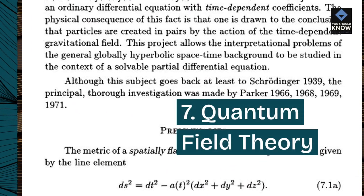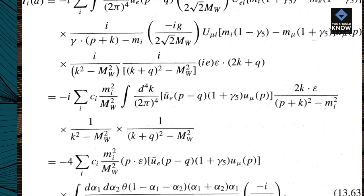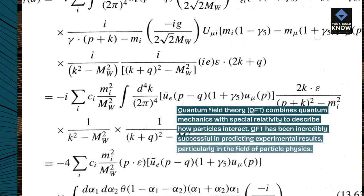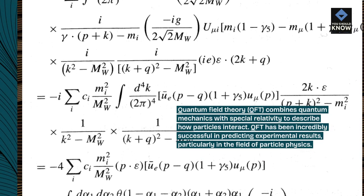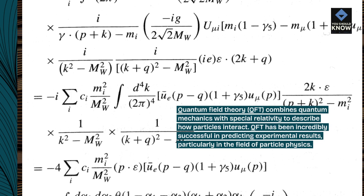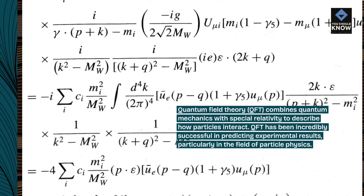7. Quantum Field Theory. Quantum Field Theory (QFT) combines quantum mechanics with special relativity to describe how particles interact. QFT has been incredibly successful in predicting experimental results, particularly in the field of particle physics.